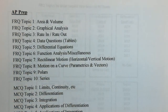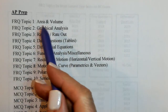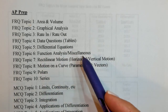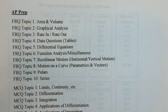We are on AP Prep FRQ Topic 4, Data Questions. All of these questions will have a table of values where we get information needed in the problem. Some questions will also involve rate in, rate out, area and volume, a differential equation to solve, or maybe a series — but some information will have to be gained from reading the table of values.